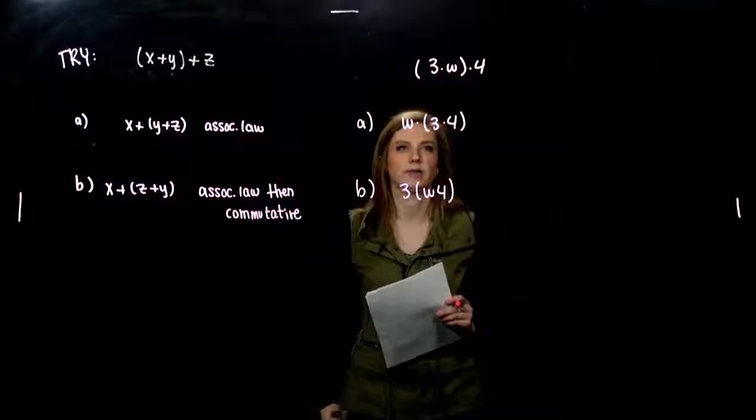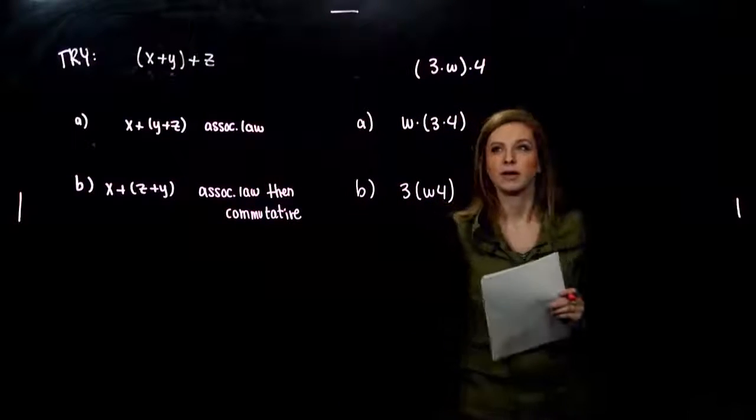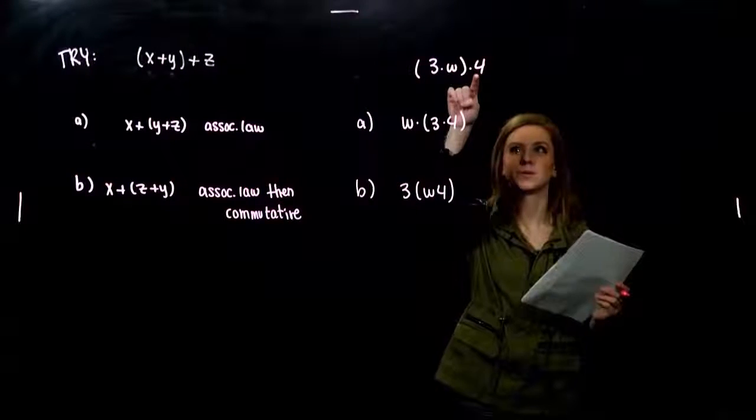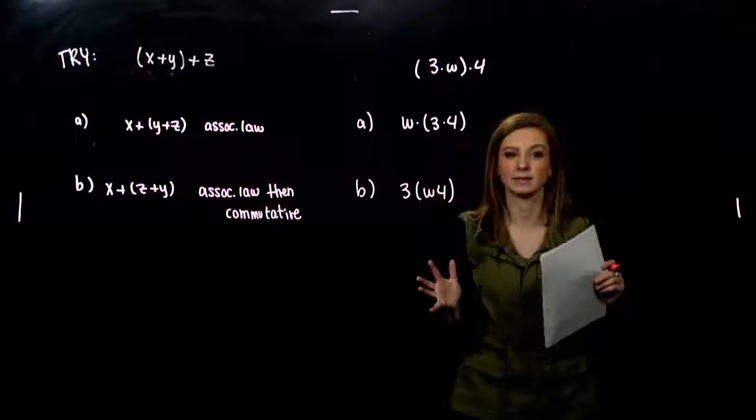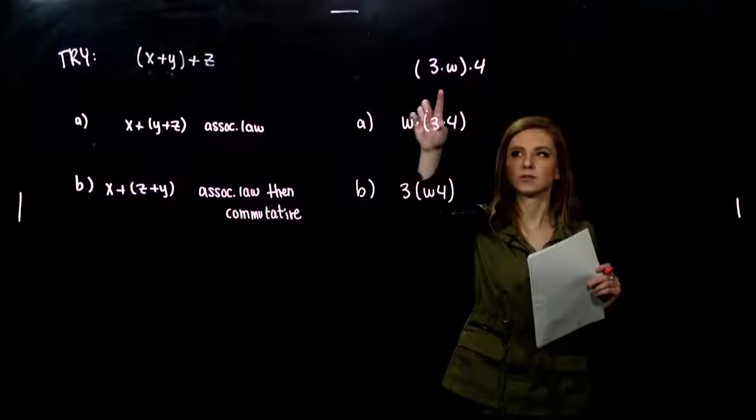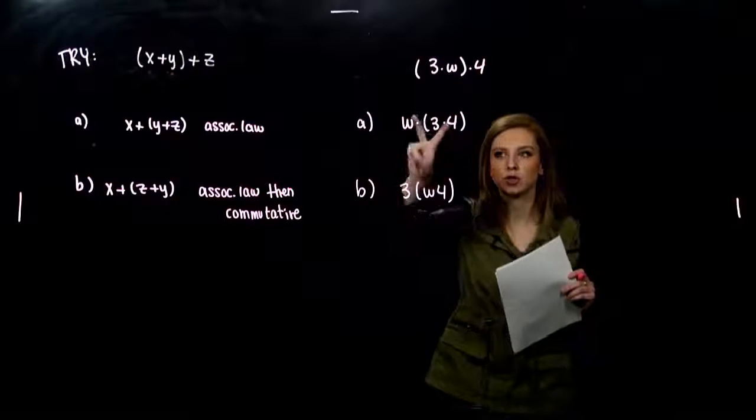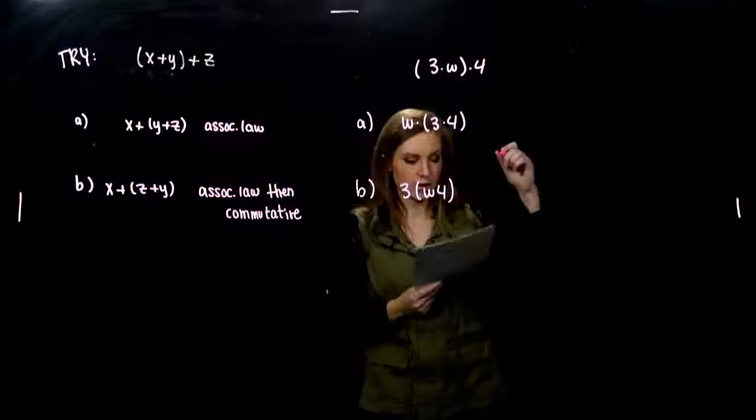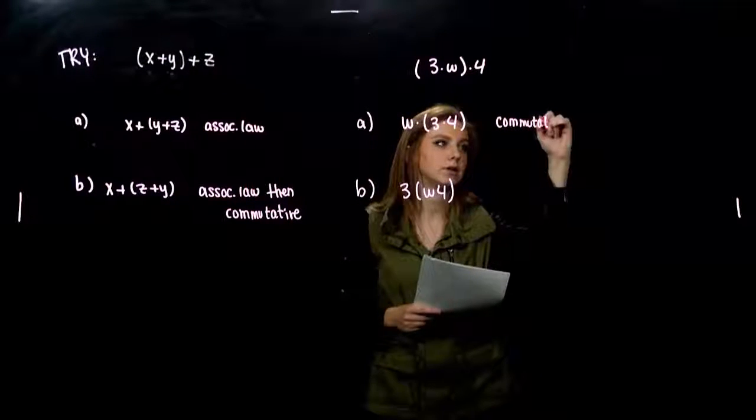Alright, for the second part. Again, the order did change. And what stayed in the same place? Four didn't move. So, in the very beginning, he shouldn't be grouped with anyone because I want him to stay where he is. But, what do you notice? Three and W, they've switched places. So, the first thing we did here was what? We had to switch the order of W and three. So, first, we did the commutative law. Commutative, we changed the order.